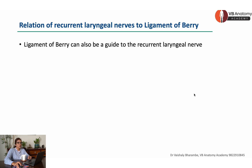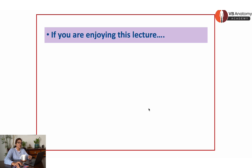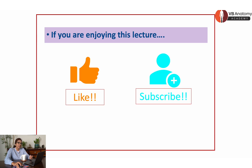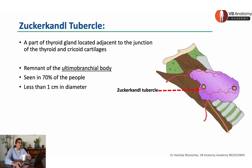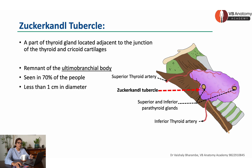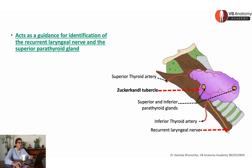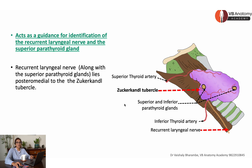The ligament of Berry can also be a good guide for finding the recurrent laryngeal nerve. One last important landmark is the Zuckerkandl tubercle, which is present in 70% of individuals and has a specific relation to the superior thyroid artery, inferior thyroid artery, parathyroids, and recurrent laryngeal nerve. It acts as a guide for the recurrent laryngeal nerve, which along with the superior parathyroid lies most posteromedial to the Zuckerkandl tubercle.